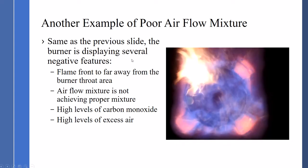As shown in the previous slide, the burner is showing a slow or negative feature. The flame front is too far away from the burner throat. Airflow mixture is not achieving proper mixture, resulting in high levels of carbon monoxide and high levels of excess air. There are also deficiencies in the burner throat tile — it was not uniform. You can see the dark areas where we are not getting proper temperature onto the throat area.